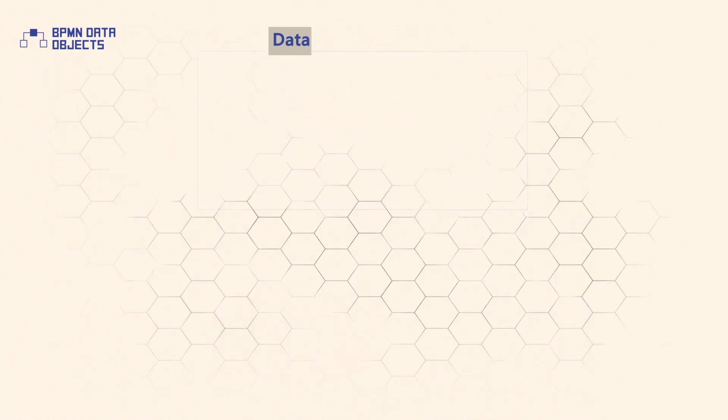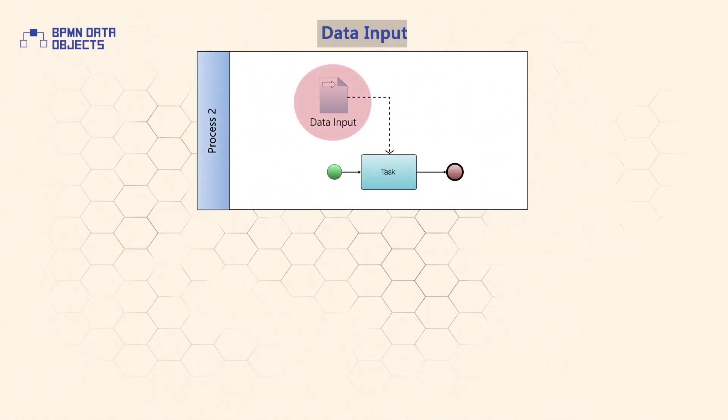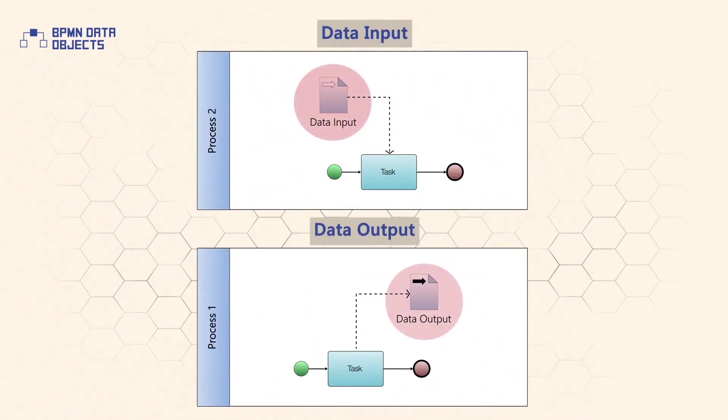The exchange of information between processes can be modelled with data inputs and data outputs. Data inputs represent the inputs to a top-level process or a called process, whereas data outputs are displayed on a top-level process diagram to show the outputs of the process.